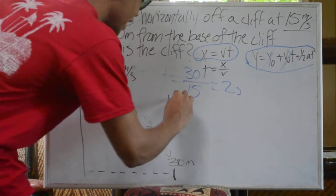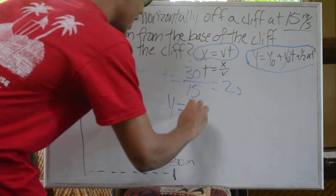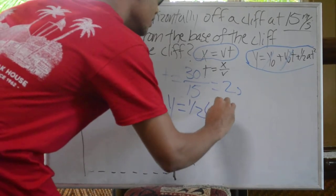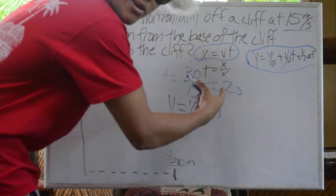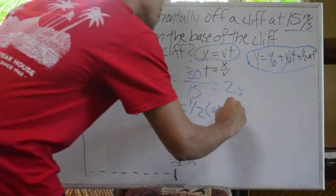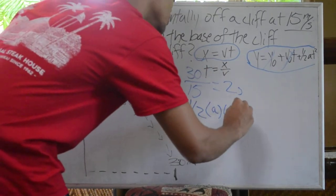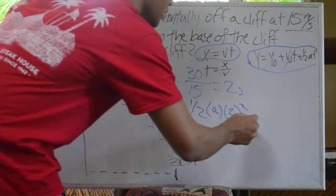That leaves us with y equals one-half at squared. We already figured out t is 2 seconds, so one-half at squared, which also equals 4.